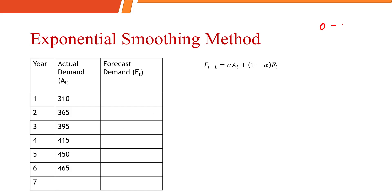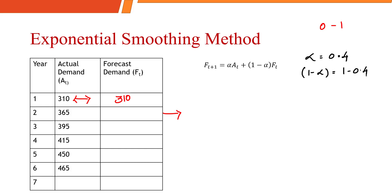Alpha can always take a value between 0 and 1. For the first year, you are given with the demand but there is no forecasted demand. Without having the previous year demand, it will not be possible. In this case, whatever is your actual demand, you can straight away post that as the forecasted demand. Starting from period 2 onwards, we use the formula. In this given sum, alpha is 0.4 and 1 minus alpha is 0.6.